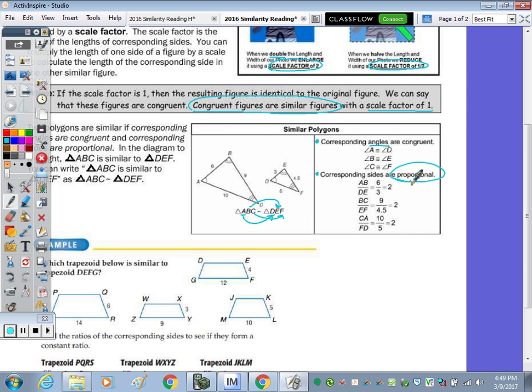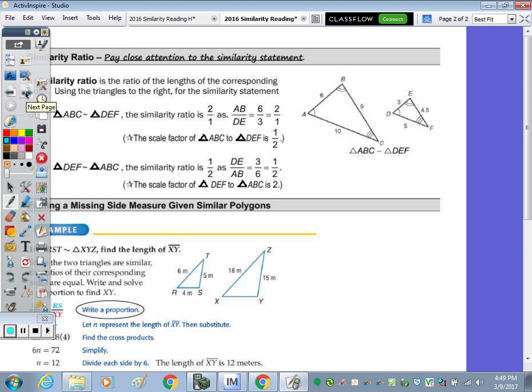Now, on the back, with the similarity ratio and scale factor, the order of the similarity statement is important. So in this first bullet, we're comparing ABC to DEF. So the ratio of the sides, ratio is a comparison by division, 6 over 3 is 2 to 1. But this triangle, DEF, is half of triangle ABC. So if we multiply each side by one half, that gives us the resulting triangle, DEF. So scale factor is what we multiply by, and the scale factor is one half.